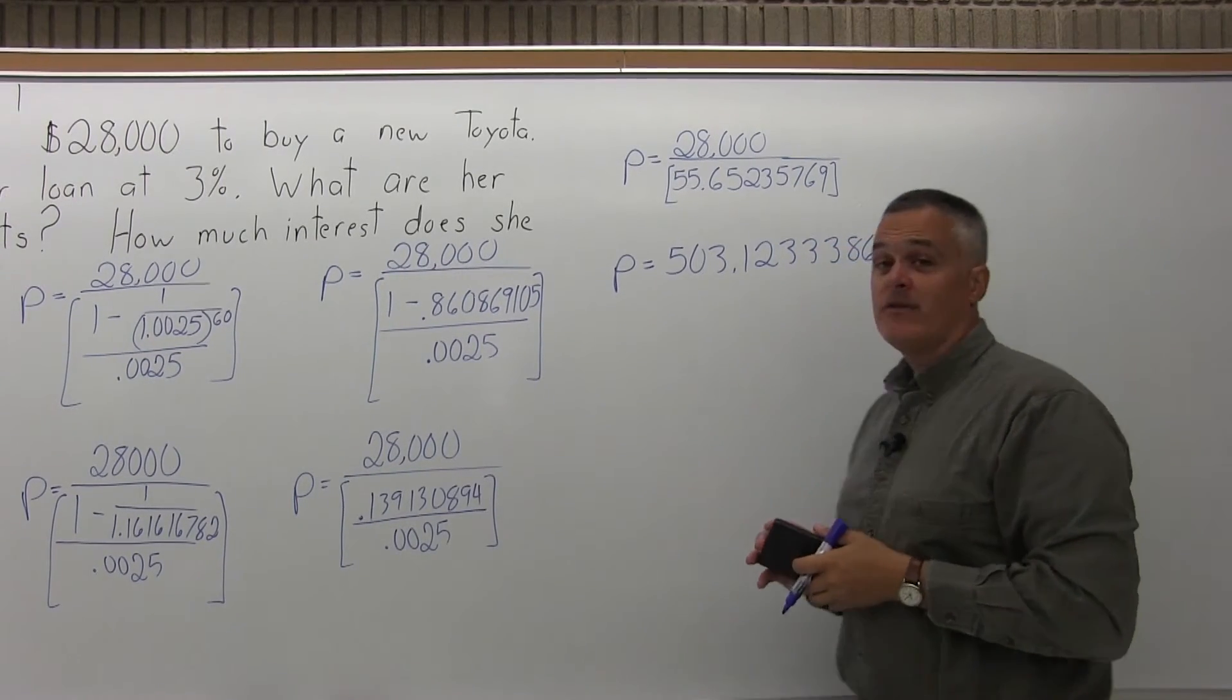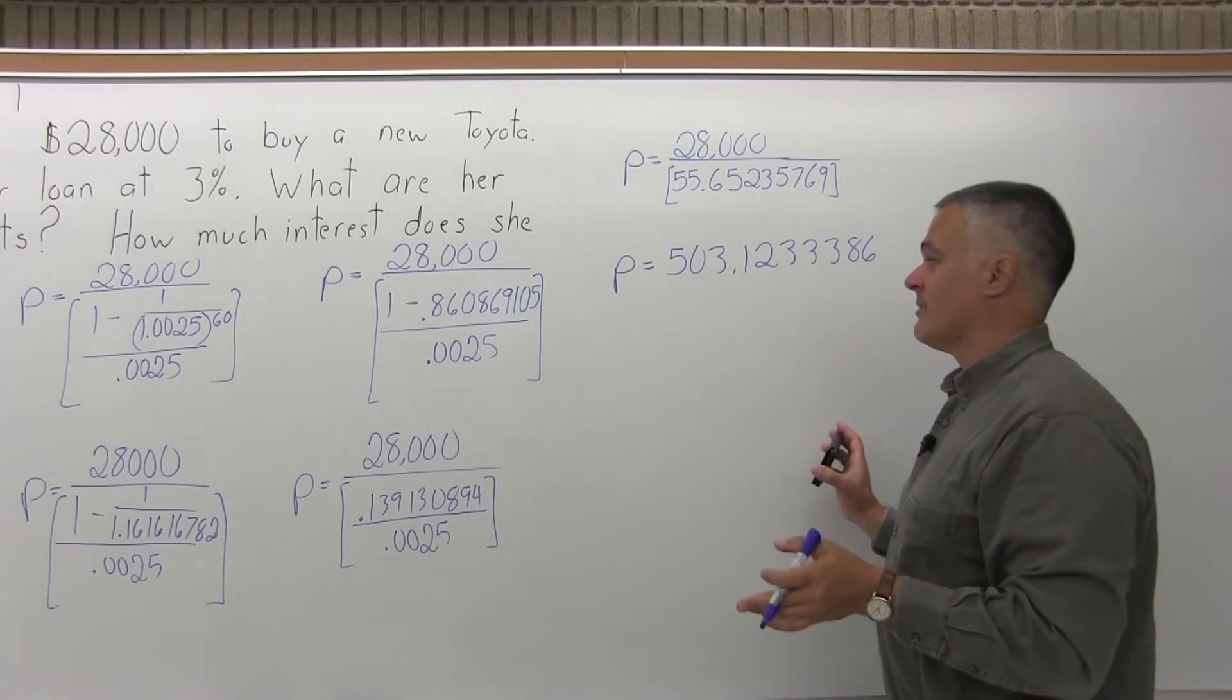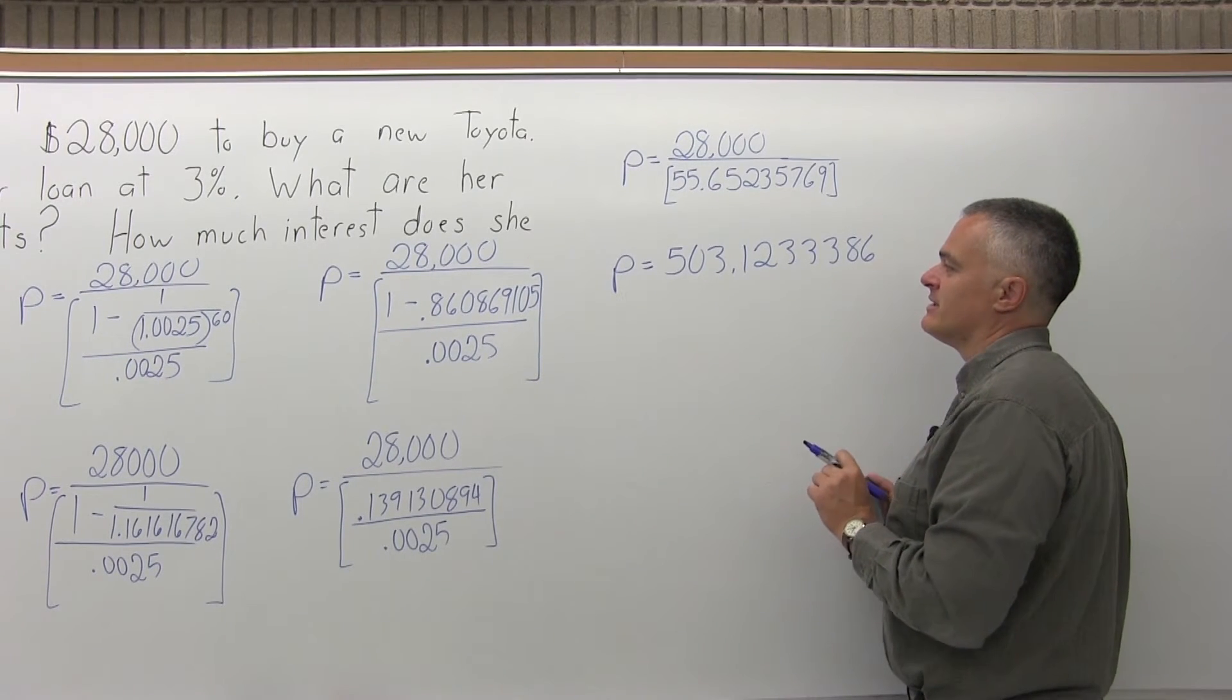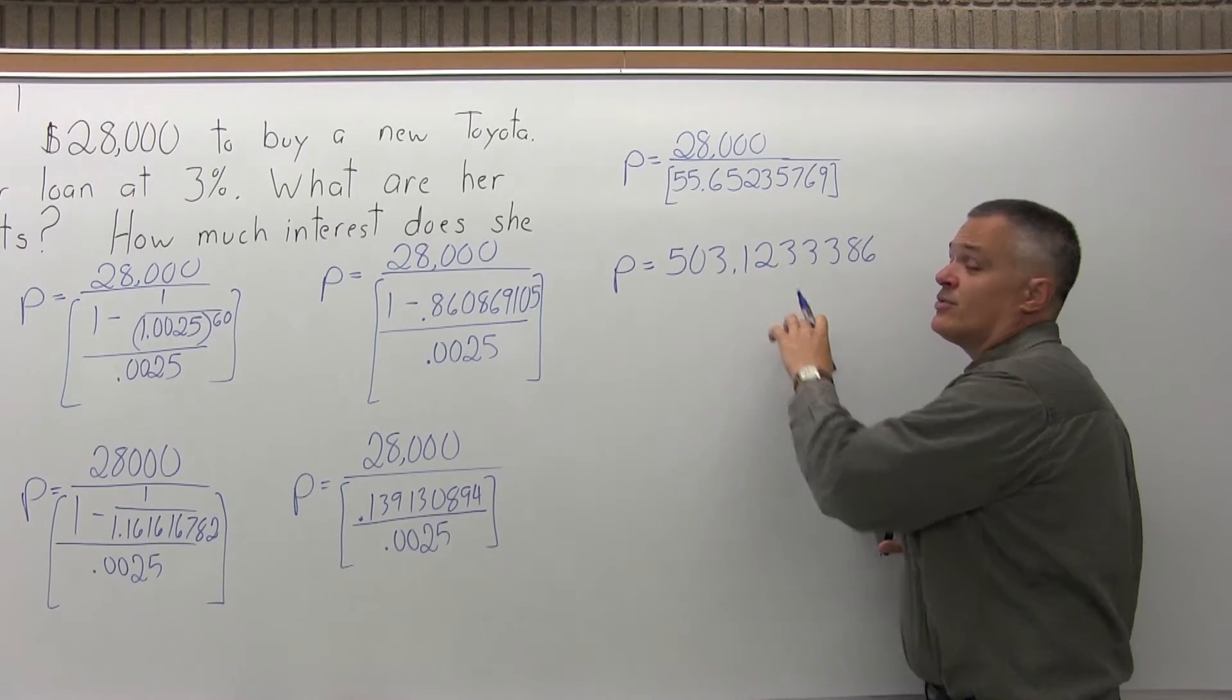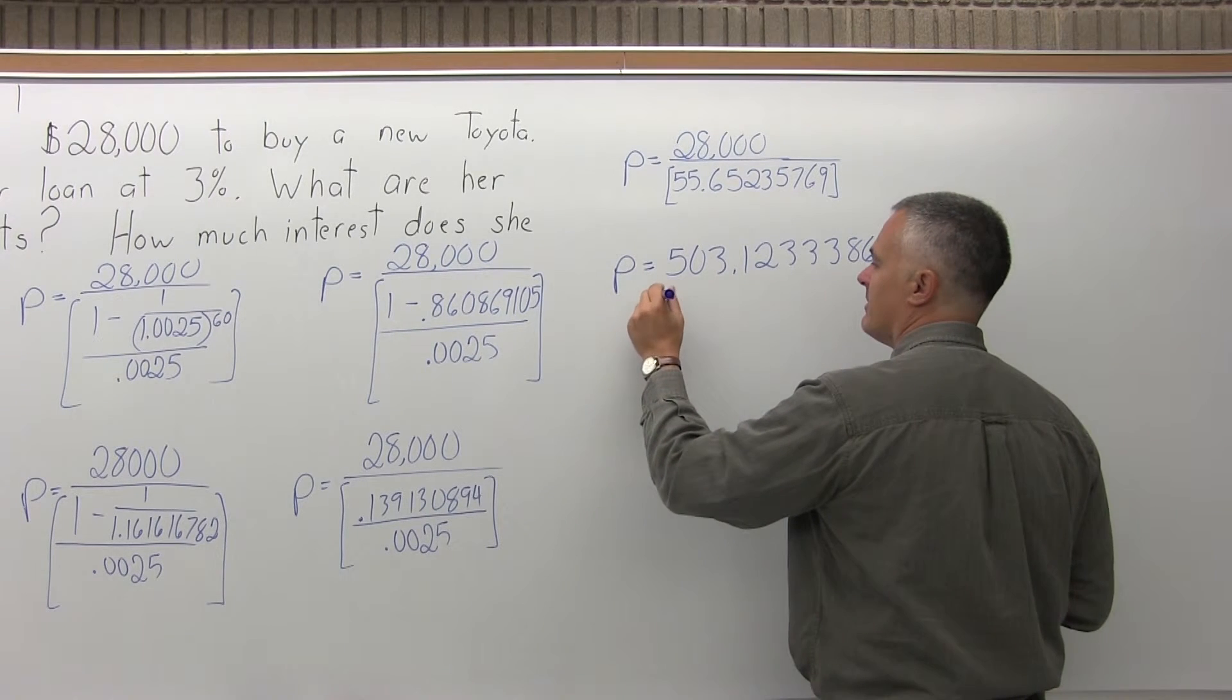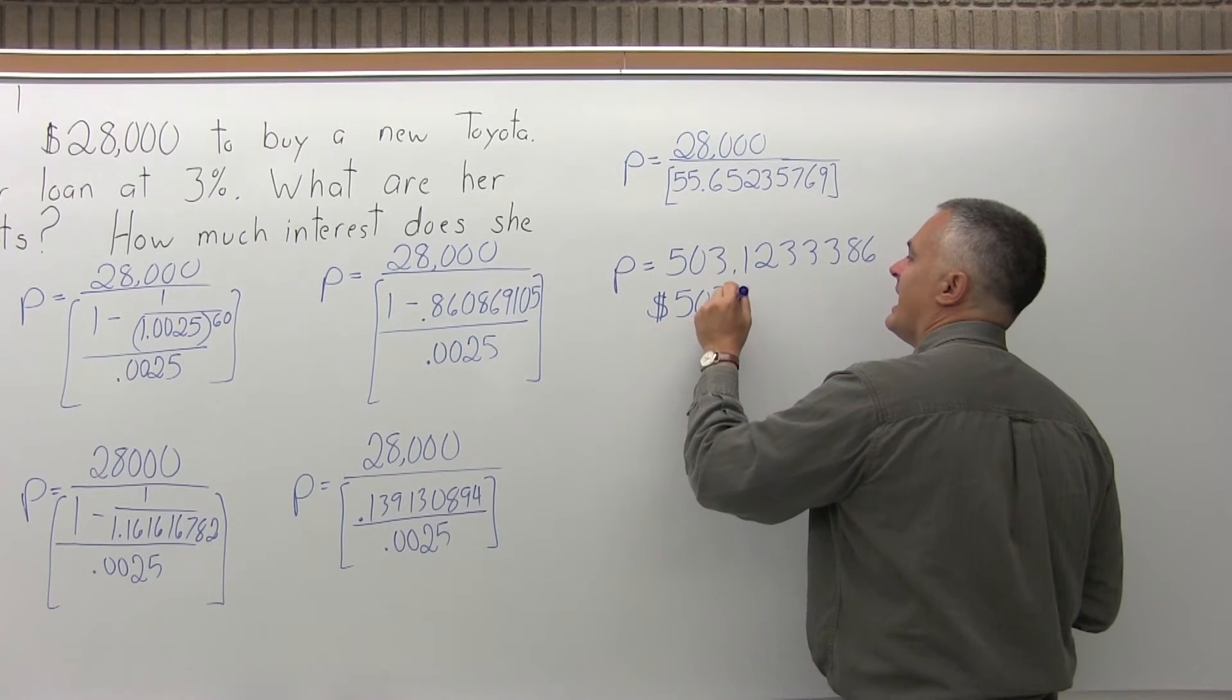And the final answer is 503.1233386. Now, when I have the final answer, I want to round it to two places after the decimal. I don't want so many. I kept all the decimal places all the way through. And now, at the end, I get to chop it to two places after the decimal. So after my decimal, I have 0.123. The 3 is not big enough to make it 13 cents. It's going to stay at 12 cents. So my monthly payment will be $503.12.